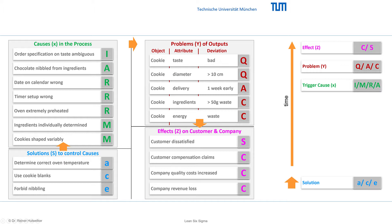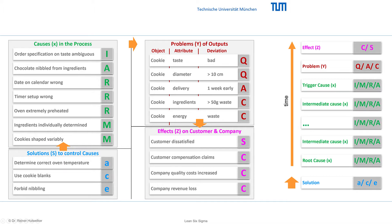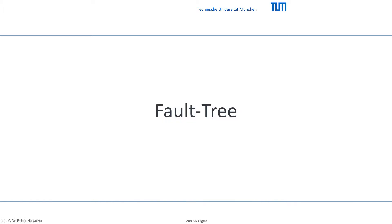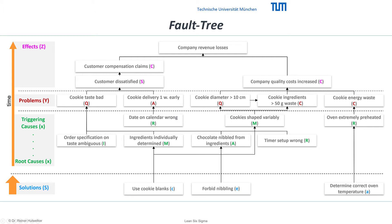In some cases we can control this trigger to solve the problem. In other cases we must analyze the chain of causes from the trigger that releases the problem via intermediate causes to the primary negative influence, the root cause, that we should control. It makes no sense to assume root causes and develop solutions without knowing the trigger. The hierarchical fault tree provides an elegant way to represent the chronological relationships between solutions, causes, problems and their effects in a clear manner.